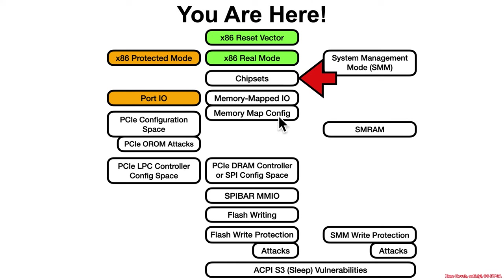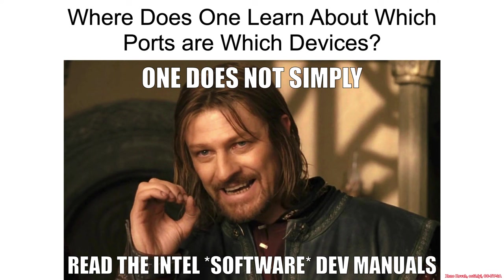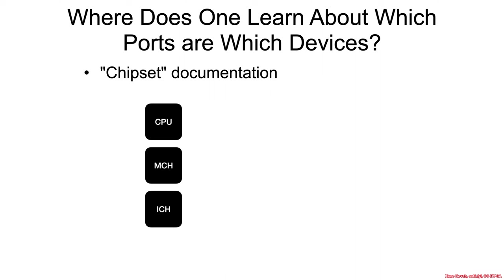Moving along on our path towards eventual flash write protection, we need to learn about chipsets. These are chips that have some of the chunks of hardware that we care about as we make our way towards flash writing. In architecture 2001, we said that when you want to know where ports come from for port IO, one does not simply read the Intel software development manuals — one reads the chipset documentation.